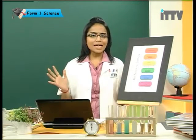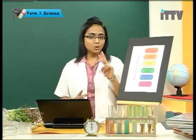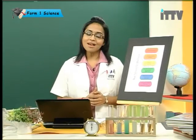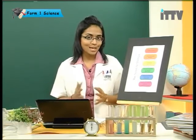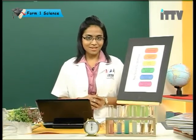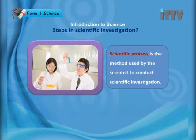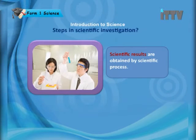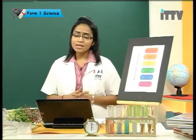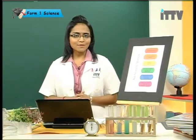So how can you define scientific study? Scientific study has got two main points: scientific process and scientific results. You carry out an experiment, then you get the results of the experiment. As simple as that. Scientific process is the method used by the scientists to conduct scientific investigation. The method used is called scientific method. Through systematic investigation, scientists can acquire scientific knowledge. Scientific results are obtained by scientific process. Now you came across so many words: scientific results, scientific knowledge, scientific process, scientific method. Let us learn what scientific method is all about.